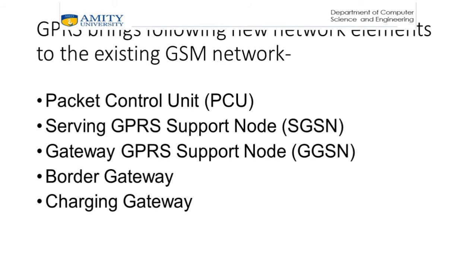GPRS adds the following new network elements to the existing GSM network: Packet Control Units (PCU), Serving GPRS Support Node (SGSN), Gateway GPRS Support Node (GGSN), Border Gateway, and Charging Gateway. The PCU separates circuit-switched and packet-switched traffic from the user and sends them to the GSM and GPRS networks separately. It also performs most of the radio resource management functions of the GPRS network.